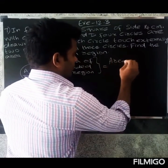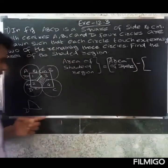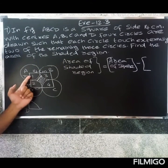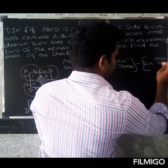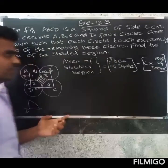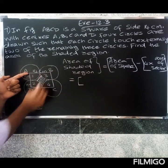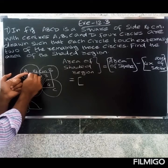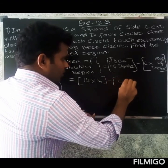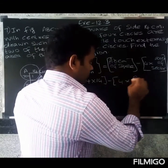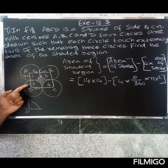Area of shaded region = area of square minus four sectors. Area of the square: side is 14, so 14 × 14. Minus four into the area of one sector, which is (θ/360) × π × r².